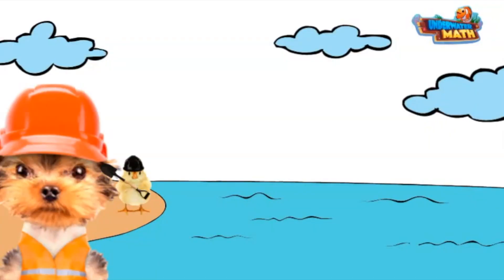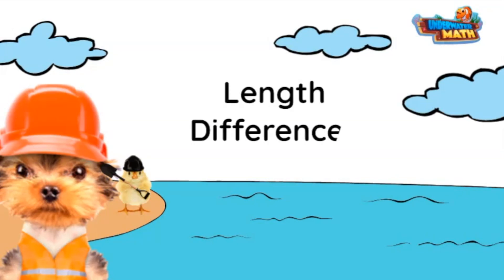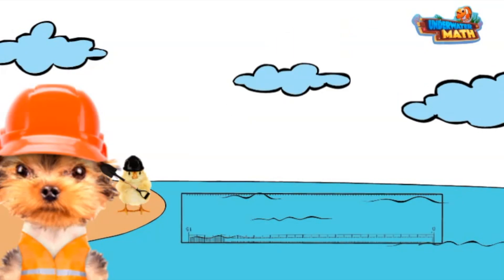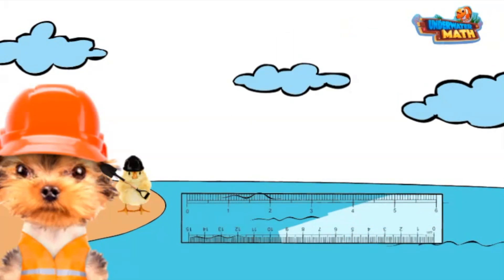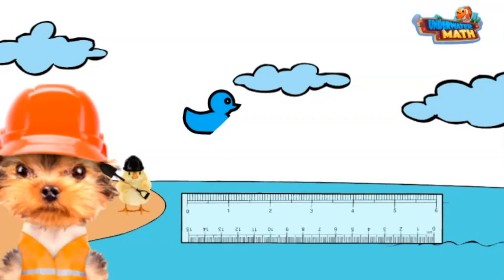Daisy and I made it to the lake. Now we are going to talk about length differences. This means we are going to use our measuring knowledge to find the difference between two objects. The ducks are going to help us today. They love competition and keep track of how far they can glide.